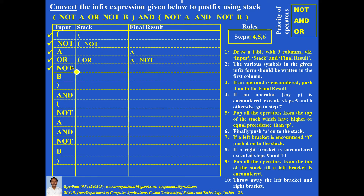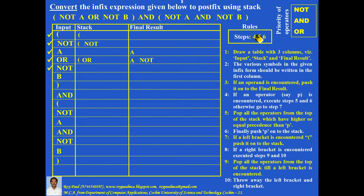Again an operator is encountered — two things. Step 5: the top of the stack contains the OR operator. OR has lower precedence compared to NOT, so it should not be popped to the final result. Step 5 is over. Step 6: push this NOT operator onto the stack. An operand is encountered — push it onto the final result. A NOT is still in the stack and B is added to the final result.